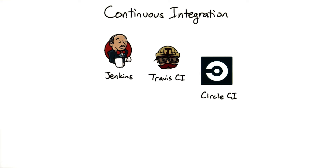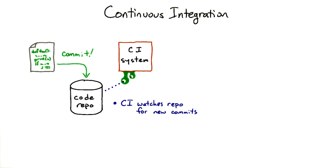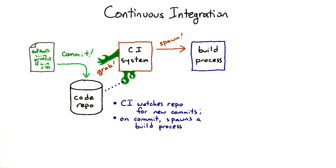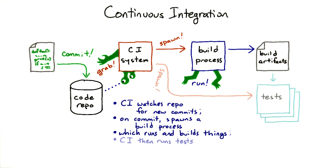All of them work on the same principles. The CI system watches a code repo or branch, looking for new commits written by developers. When a new commit occurs, the CI system grabs it and spawns a build process. The build process runs and produces compiled binaries or data files. Once the build is successfully complete, the CI system then spawns tests that can be run on the build artifacts.